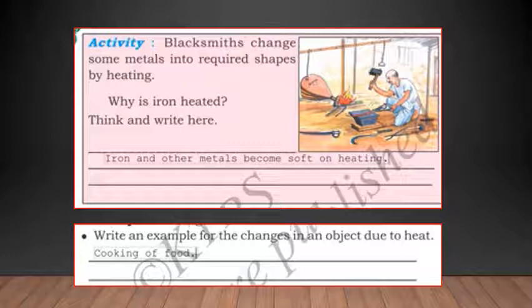Blacksmiths change some metal into required shape by heating. Why is iron heated? The answer is iron and other metals become soft on heating. When it becomes soft, it becomes easier for the blacksmith to change the shape of that matter or iron or any other metal. Even gold ornaments or silver ornaments are heated first and then brought into different shapes which are desirable to us.